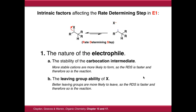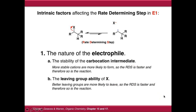Because the rate determining step in E1 and SN1 is identical, the intrinsic factors affecting the speed of the reaction are fundamentally identical. The nature of the electrophile is the only thing that matters, since it's the only molecule involved in the rate determining step. The stability of the carbocation intermediate and the leaving group ability of X are the same factors which contribute to an E1 elimination.